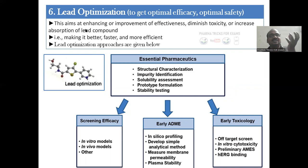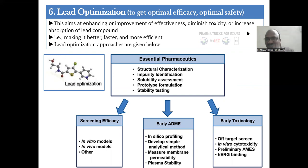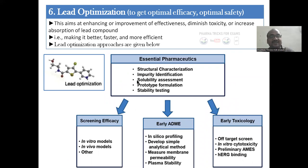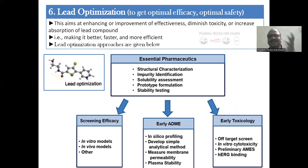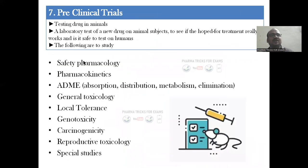Stage six is lead optimization — enhancing and improving the lead to achieve optimal efficacy and optimal safety, diminishing toxicity and increasing absorption. You examine structural characterization and impurity identification. You go from a blurred raw molecule to a clear, full-fledged molecule with confirmed screening efficacy, early ADME, and early toxicology.